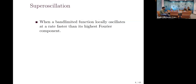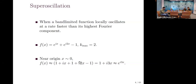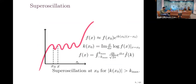Super-oscillation is defined as when a band-limited function locally oscillates faster than its highest Fourier component. For example, suppose you have a function e^(ix) + e^(i2x) - 1. The highest spatial frequency in this function is 2. But if you look at the function very close to the origin, you can approximate the function to the first order as 1 + i3x, which is approximately e^(i3x) near the origin. So the function can show behaviors which exceed the highest spatial frequency present.